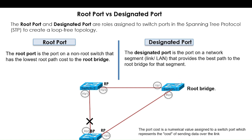On every root bridge or root switch, we will not have any root port — but every port will actually be a designated port. So on this root bridge, every port will be the designated port. On every LAN segment we will have one designated port. From this switch to this switch we have one designated port, and from this switch to this switch we have one LAN segment and one designated port selected on that segment.